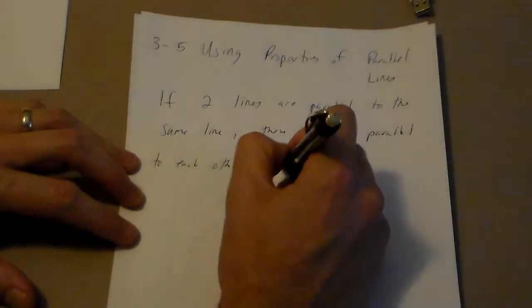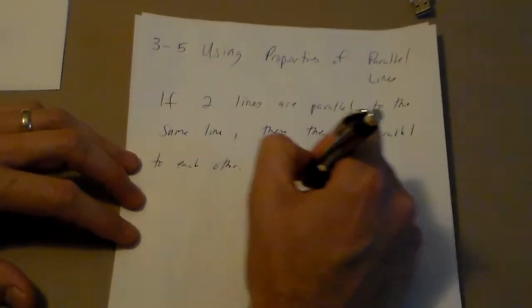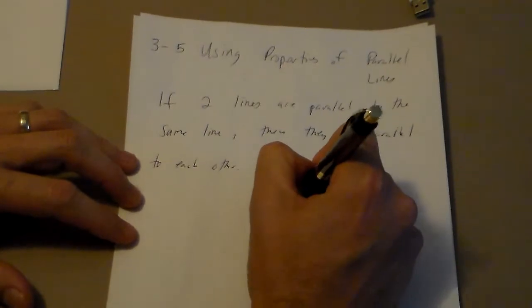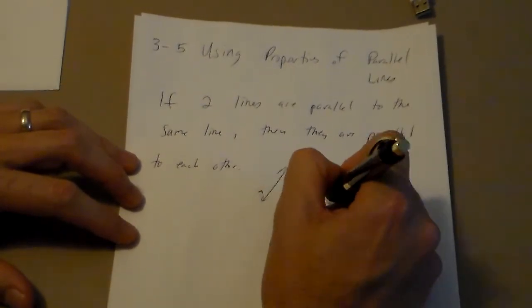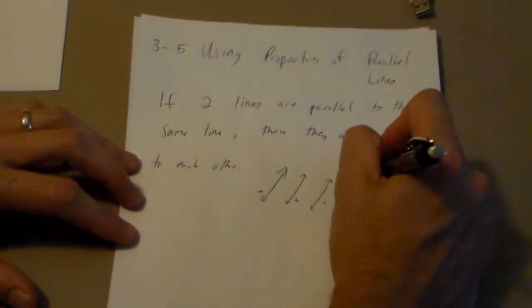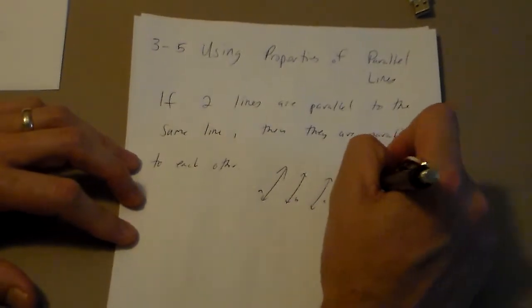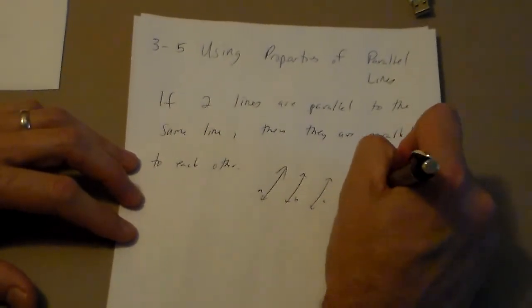So it means that if I had this and I said that was A, and I said that was B, and I said that was C. And if they told me that A was parallel to B, but then they said, oh, yeah, but we know that B is parallel to C.